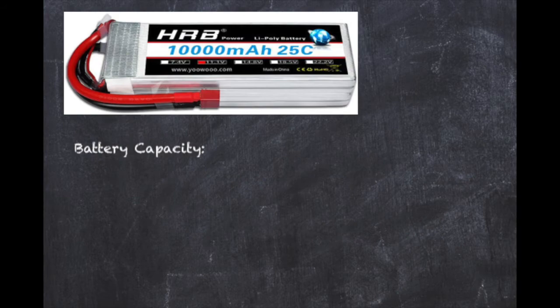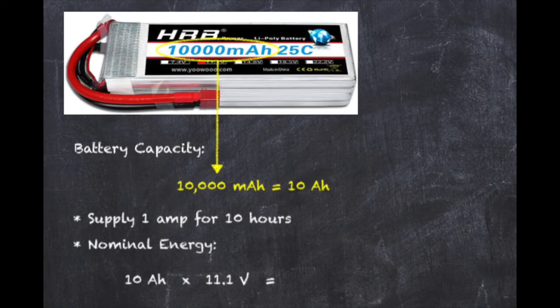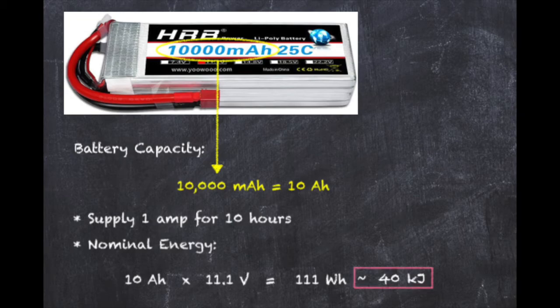The LiPo battery's capacity is related to the amount of stored energy. 10,000 milliamp hours indicates that this battery can supply 1 amp of current for 10 hours. If you prefer to think of energy, 10,000 milliamp hours at 11.1 volts is about 111 watt hours or about 40 kilojoules of stored energy.